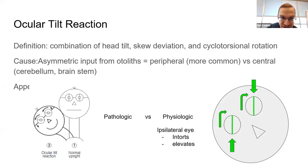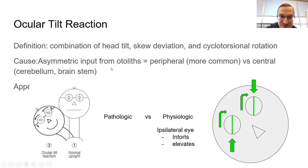Ocular tilt reaction consists of head tilt, skew deviation, and cyclotorsion — we've been discussing this indirectly throughout. You're typically thinking of otolith dysfunction in the peripheral vestibular system, but it can be central as well.